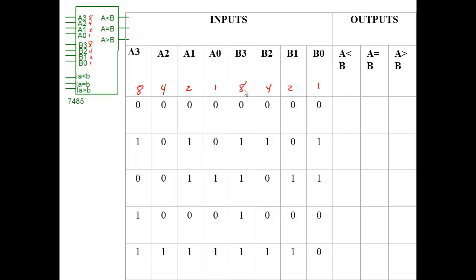Looking at number A — we've got zero, zero, zero, zero. In binary, that's all zero, so it's zero. This B is also zero, zero, zero — also zero. If the numbers are equal to each other, we put a high on A equals B, and the other two outputs are low. Now for this next example, A is eight plus two, which is 10, and B is eight plus four plus one, which is 13.